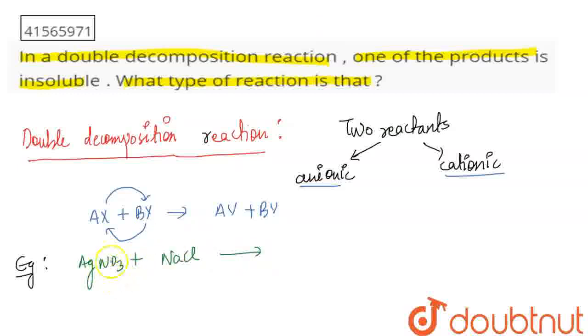So what happens in this? In AgNO3, the anionic part is NO3 negative, and here it is Cl negative. The NO3 negative will be displaced and replaced by Cl negative. So you get AgCl and NaNO3. AgCl is silver chloride and NaNO3 is sodium nitrate. You get AgCl precipitate, and this is your insoluble product.